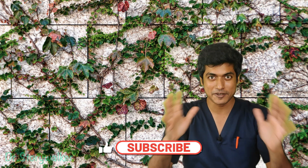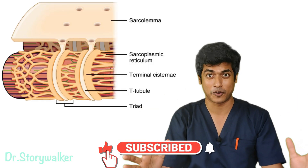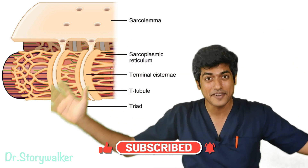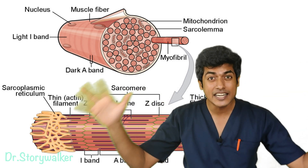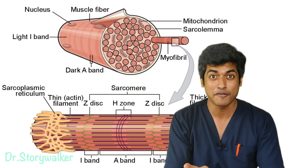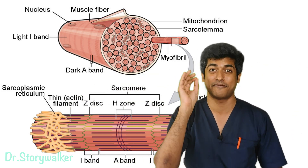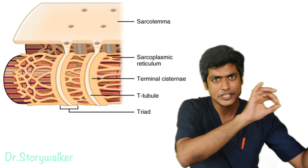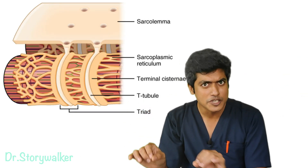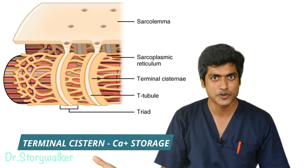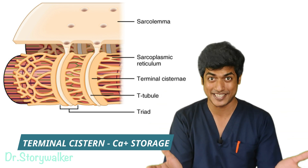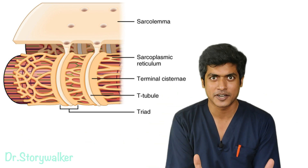Imagine an old wall with creeping, climbing plants grown all over the bricks. Similarly, this reticular network surrounds each and every aspect of every myofibril. And remember, there are hundreds — thousands — of these myofibrils in each muscle fiber. This network is basically a system of tubules.